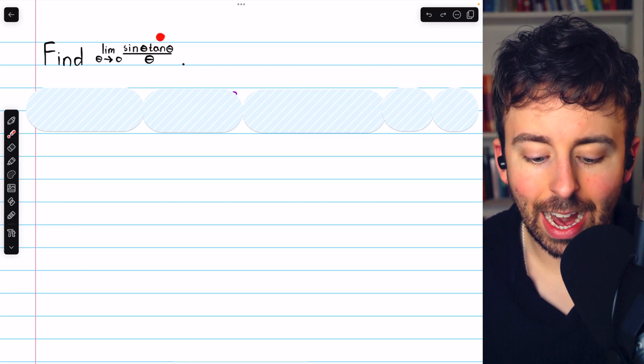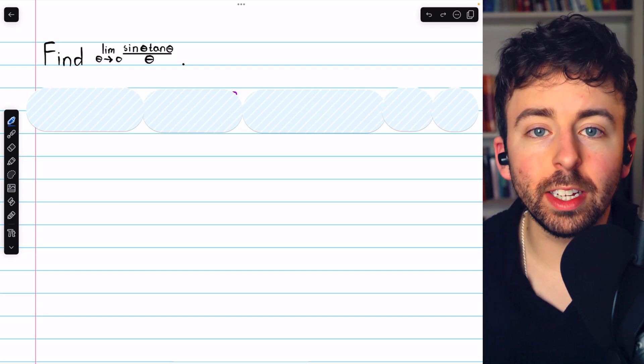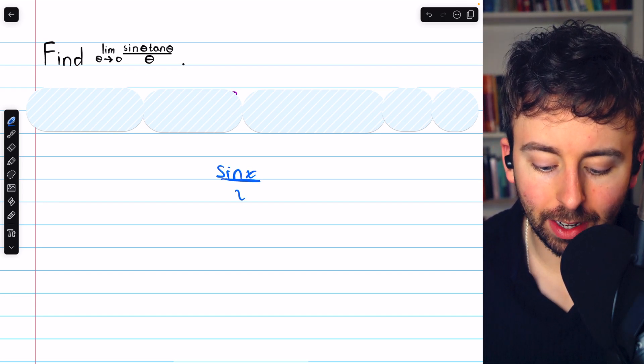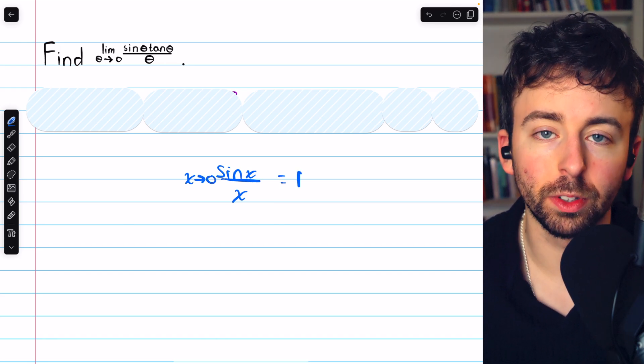To find the limit of sine theta tan theta over theta as theta approaches zero, we just need to know some trig and be familiar with the limit of sine x over x as x approaches zero. That's equal to one.